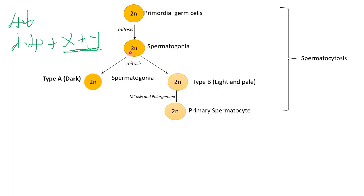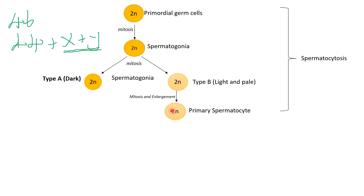Spermatogonia type A acts only as a reserve. Type B — the light and pale ones — are the ones that proceed into forming actual sperms. This process occurs at puberty. Type B spermatogonia divide mitotically again, enlarge, and produce a new cell type known as the primary spermatocyte, which is still diploid in chromosome number.